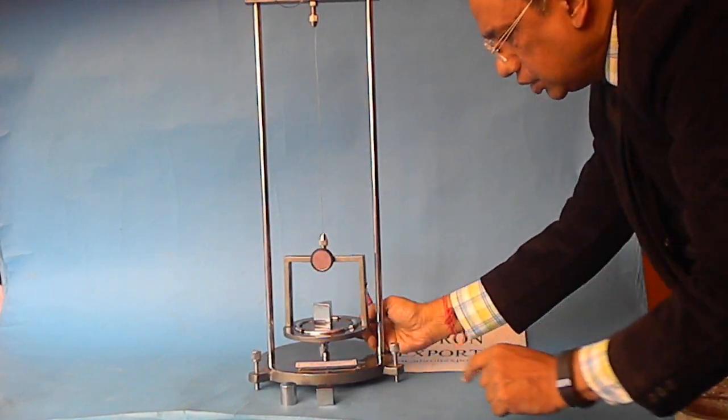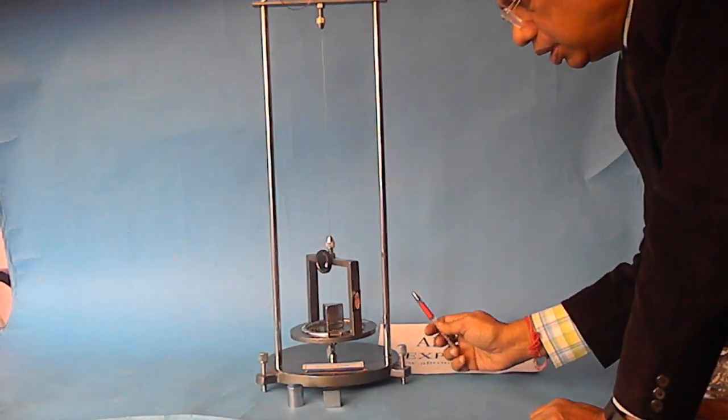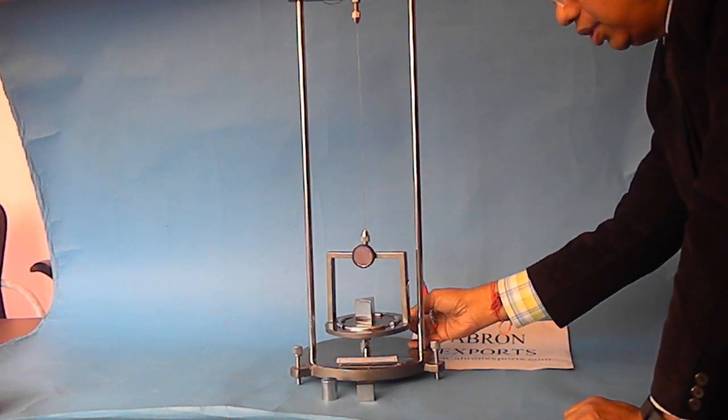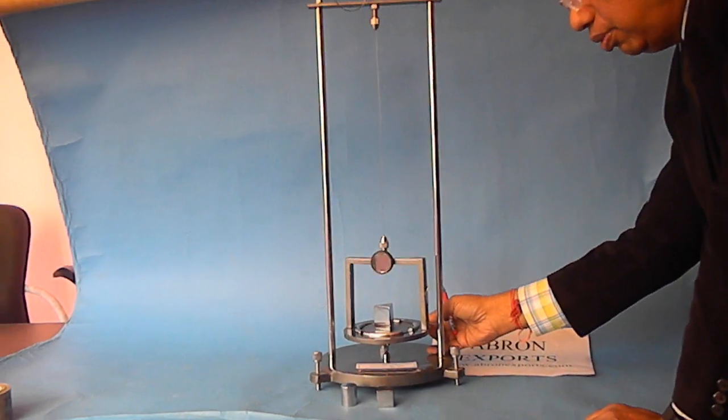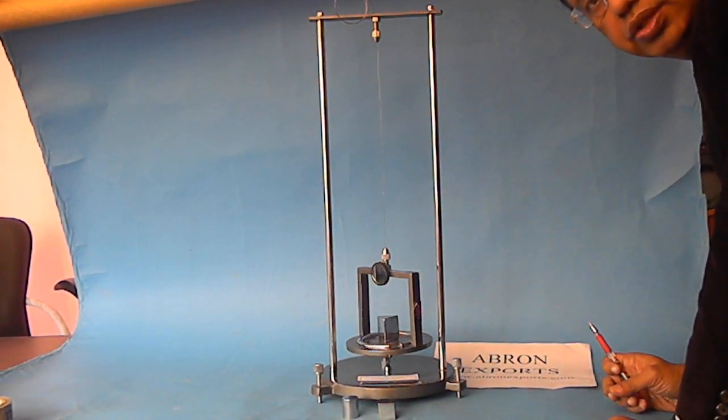And the mirror is for balance requirement if you want to see something with the telescope. Components come manually also. Thank you for viewing these products. Physics department from Abron Export dot com - please visit our website. Thank you very much.